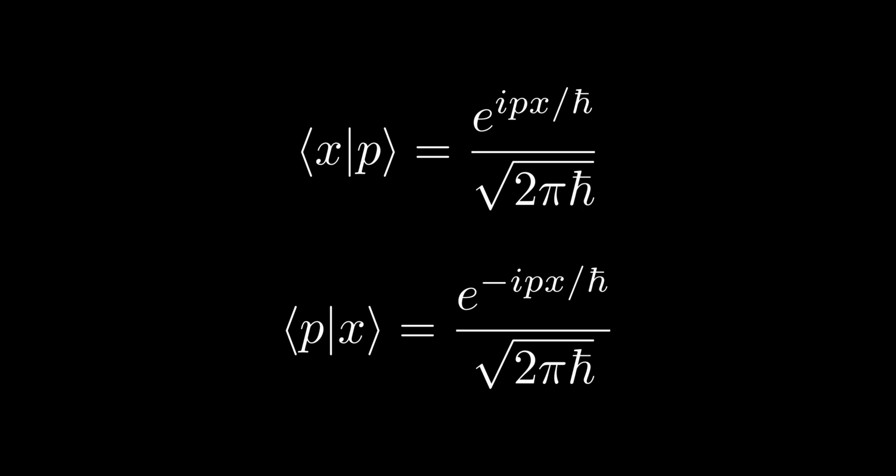Similarly, a particle with a definite position is equally likely to have any momentum. This is consistent with the result we derived in chapter 2 based on the property of Dirac delta, that both definite state of position and momentum are physically unobtainable.